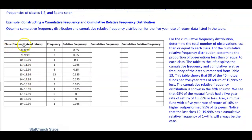We have our five-year rate of return here, our frequency, and our relative frequency. For the cumulative frequency distribution, we want to determine the total number of observations less than or equal to each class. For the cumulative relative frequency distribution, we're going to determine the proportion of the observations less than or equal to each class. The table to the left displays the cumulative frequency and the cumulative relative frequency of the data summarized from that table.